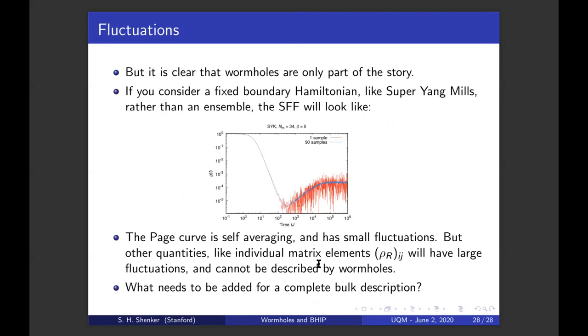Well, but it's clear that wormholes are only part of the story. If you consider a fixed boundary Hamiltonian, you know, high energy theorists are kind of old fashioned. They like to focus on various particular systems like N equals four super Yang Mills, kind of the first holographic system that was intensively studied. They don't like to mess around with it. If you have a fixed Hamiltonian, not an ensemble of Hamiltonians, then the spectral form factor actually looks like this red curve. The slope is what we call self-averaging, but the ramp and the plateau have fluctuations of order of their signal. Now it turns out that the Page curve is self averaging. It has small fluctuations. Its answer is accurately given by the wormhole answer, even for a fixed Hamiltonian. But other quantities of interest like individual matrix elements of the radiation density matrix, or an S matrix of scattering a particular state off a black hole, will have large fluctuations and cannot be described just by wormholes.